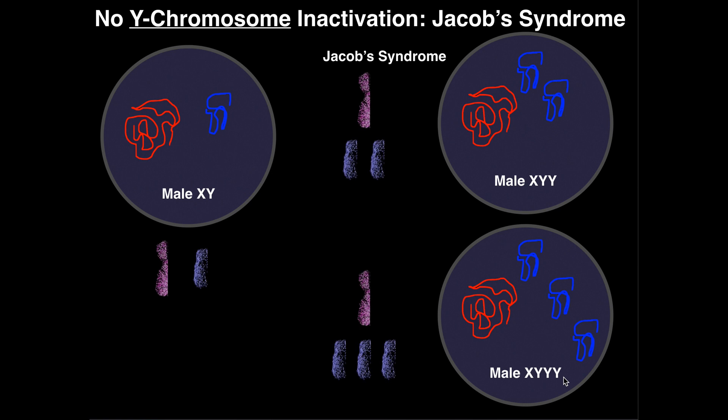Two things about Jacob's Syndrome I want to mention: first, these individuals are absolutely indistinguishable from the rest of the population. There is a chance that they can be a slight amount taller, with a slightly higher amount of muscle mass, but not enough to where you'd look at somebody and say 'oh, that guy has Jacob's Syndrome.' They're pretty much indistinguishable from the rest of the population. One of the reasons for that — and I say this very loosely — is due to the almost incompetent nature of the Y chromosome.